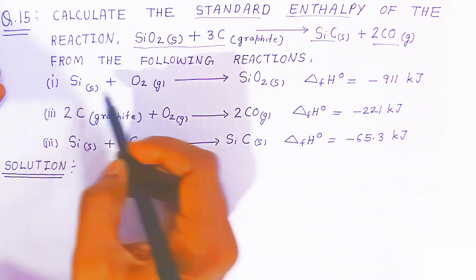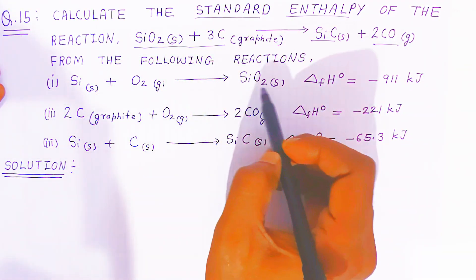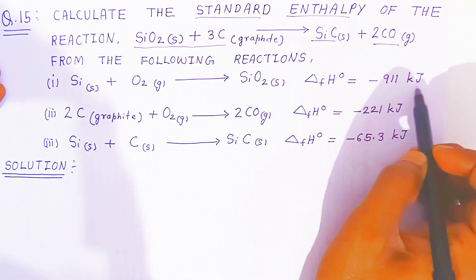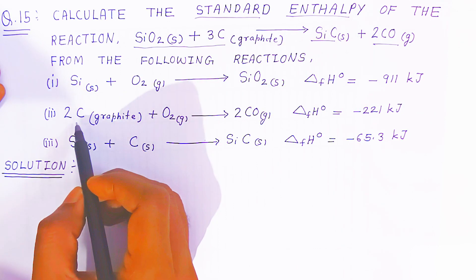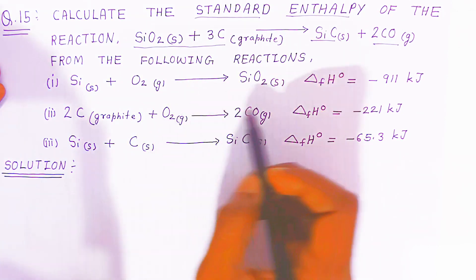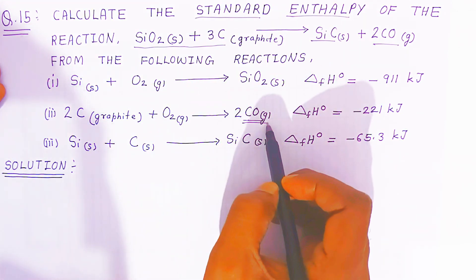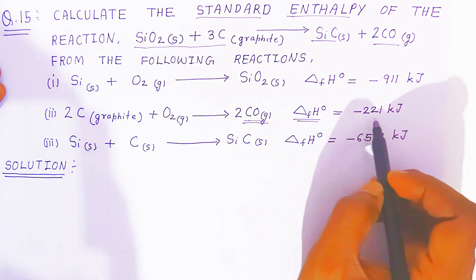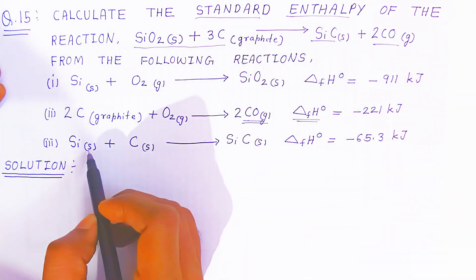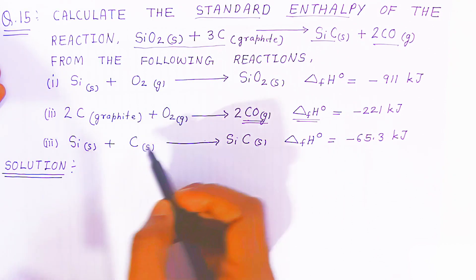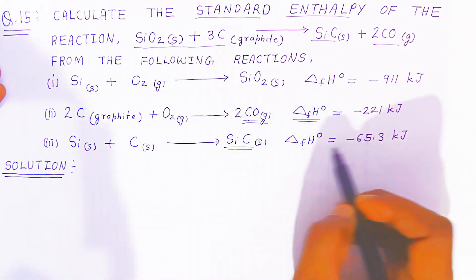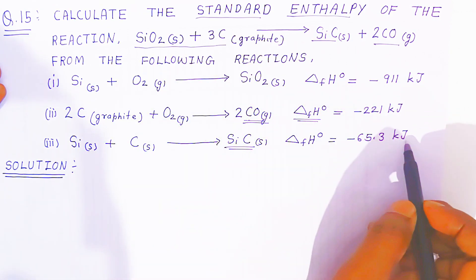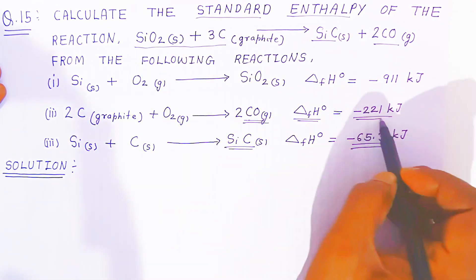First reaction: silicon solid reacting with oxygen gas gives silicon oxide; standard enthalpy of formation is minus 911 kJ. Second reaction: carbon graphite reacts with oxygen gas forming carbon monoxide; standard enthalpy of formation is minus 221 kJ. Third reaction: silicon solid reacting with carbon solid forms silicon carbide; standard enthalpy is minus 65.3 kJ.